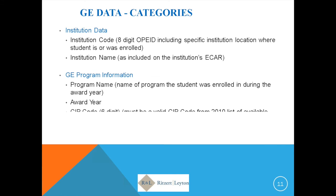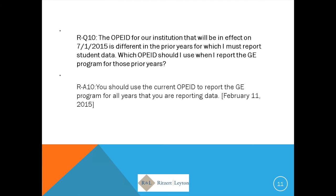There are multiple categories of information you're providing related to periods of enrollment. The first is institutional data, showing your institution's OPE ID number as well as the eight-digit number — specific down to the site and your name. It will also contain GE program information showing the program's name, the award year, and the six-digit SIP code.